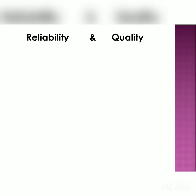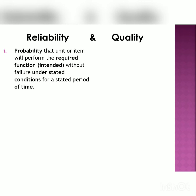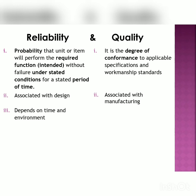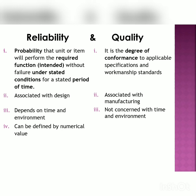Now, briefly, the difference between reliability and quality. Reliability is the probability that a unit or item will perform the required or intended function without failure under stated conditions for a stated period of time. Quality is the degree of conformance to acceptable or applicable specifications and workmanship standards. Reliability is associated with design, while quality is associated with manufacturing. Reliability depends on time and environment, whereas quality is not concerned with time and environment. Reliability can be defined by a numerical value.